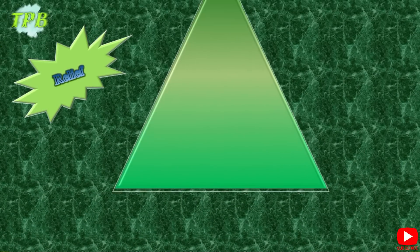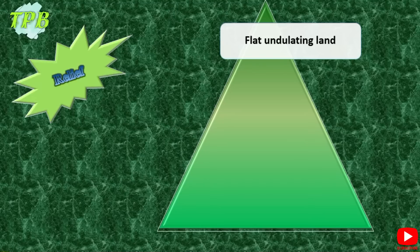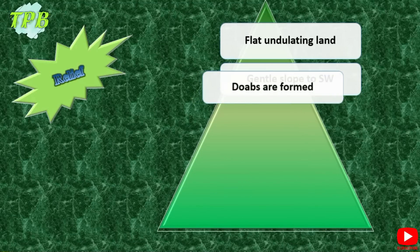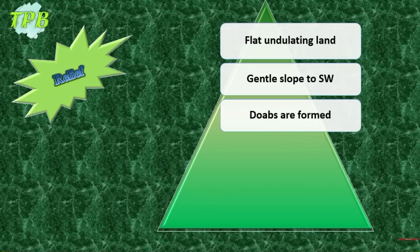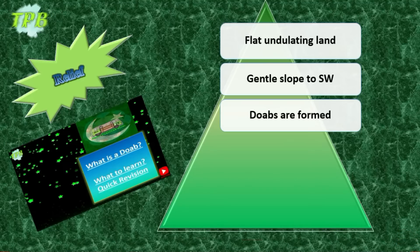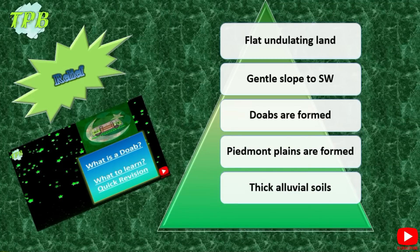Looking at the relief, the Upper Indus Plain has flat undulating land with a gentle slope to the southwest — that is why the eastern tributaries flow towards the southwest. Doabs are common here, namely Sindh Sagar Doab, Chaj Doab, Bari Doab, and Rachna Doab. You can check our detailed video about doabs on the channel. Piedmont plains are also formed here, and the soils are thick and alluvial.